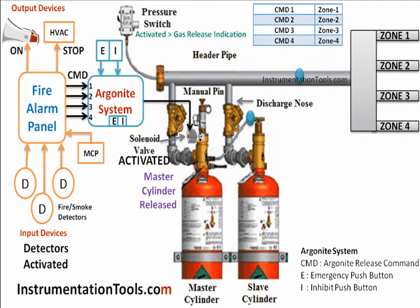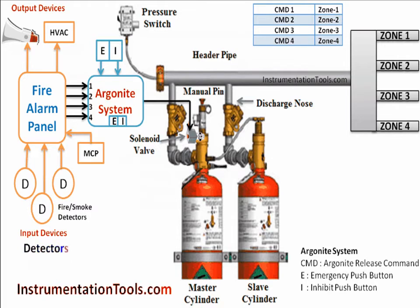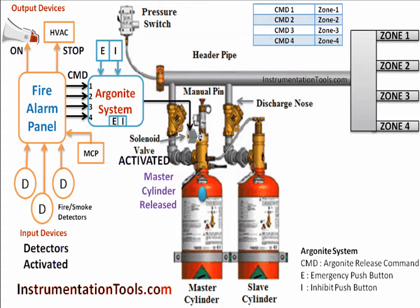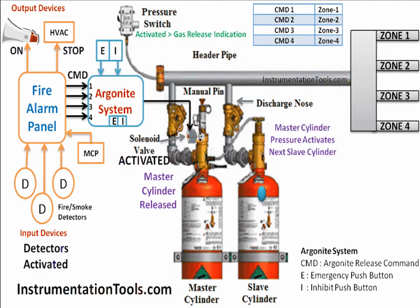If inhibit is not given and the time delay expires, the Argonite System activates the solenoid valve on the master cylinder. The master cylinder gas is released and has two paths: one to the main discharge line and one to the next slave cylinder. The master cylinder pressure activates the slave cylinder, which is then also released. Similarly, the slave cylinder may also have two paths — one to the main discharge line and one to the next slave cylinder.